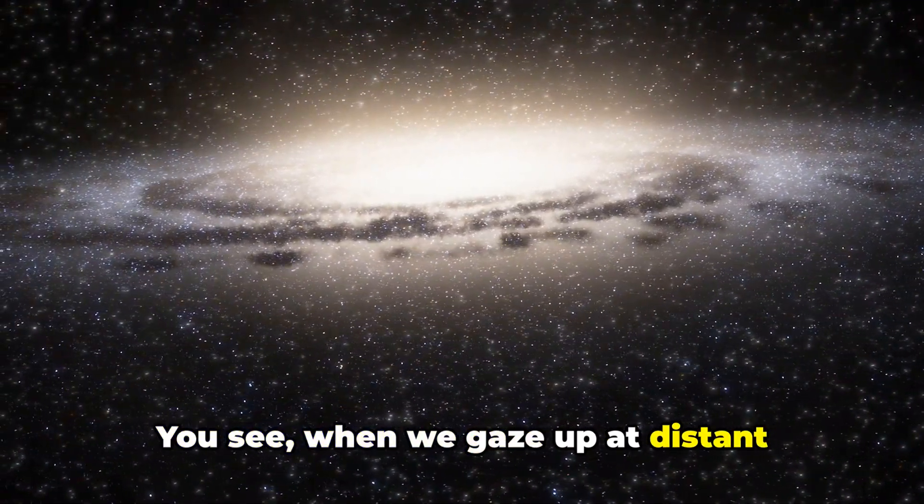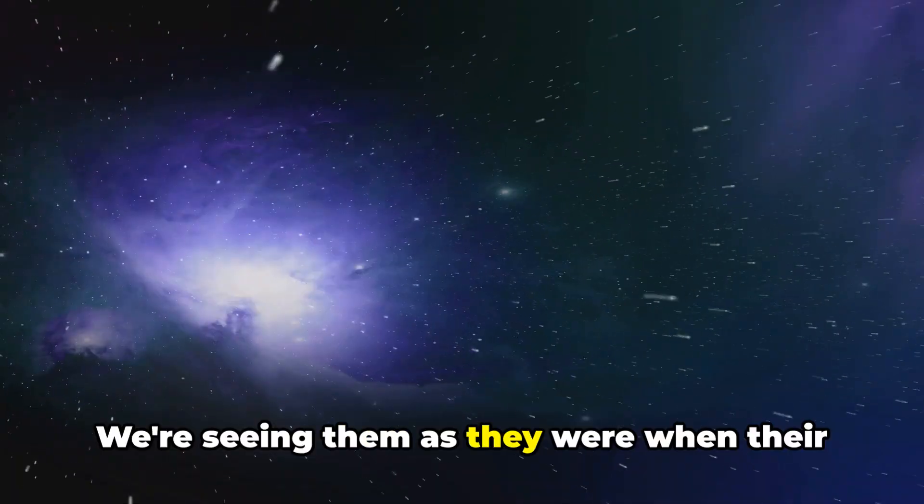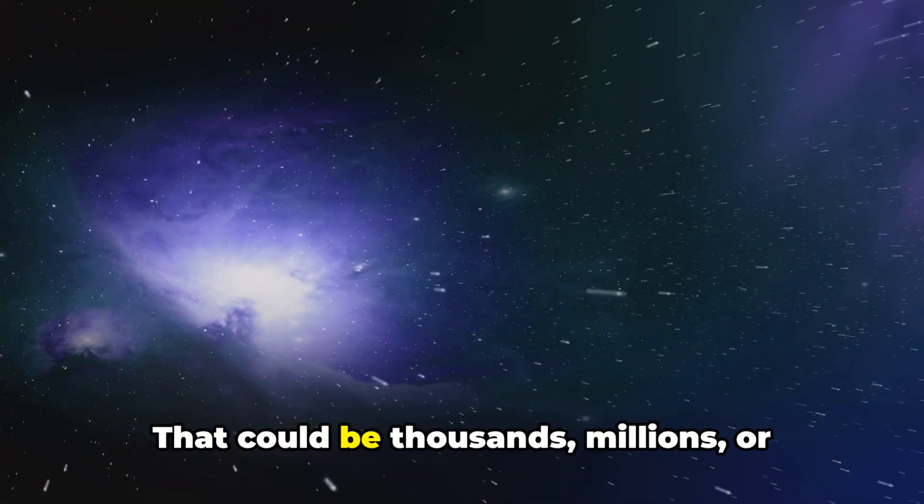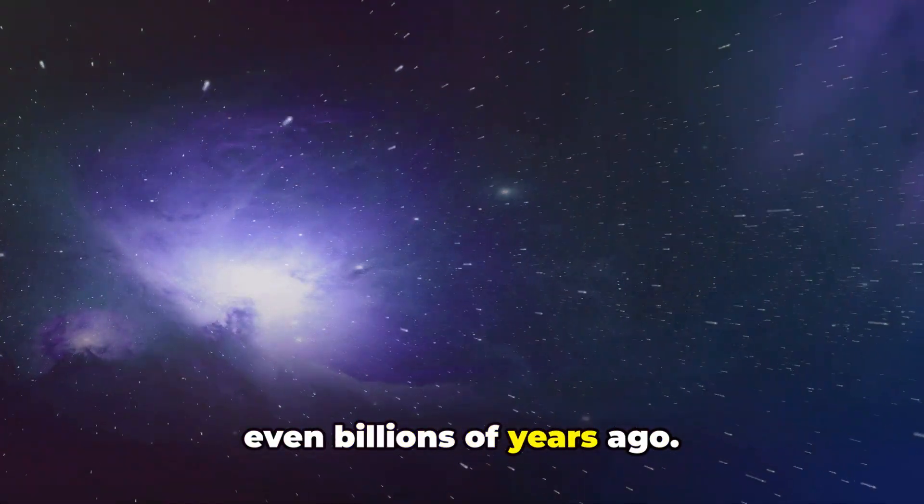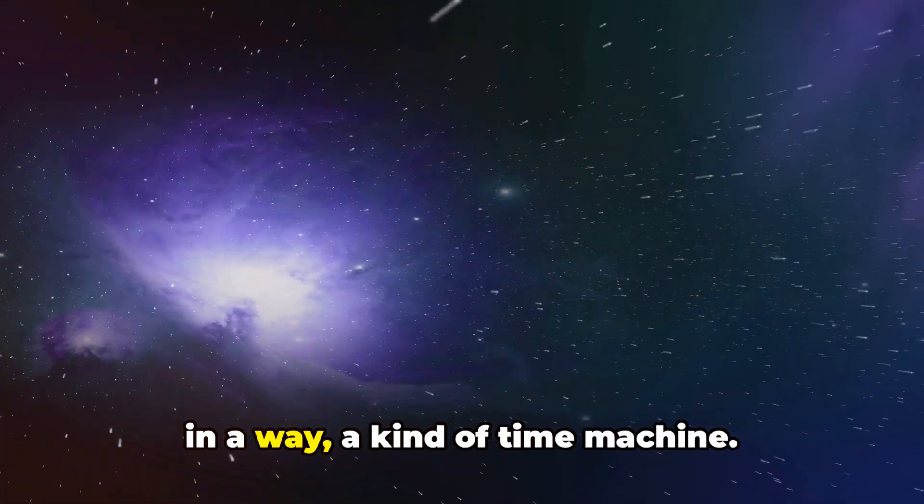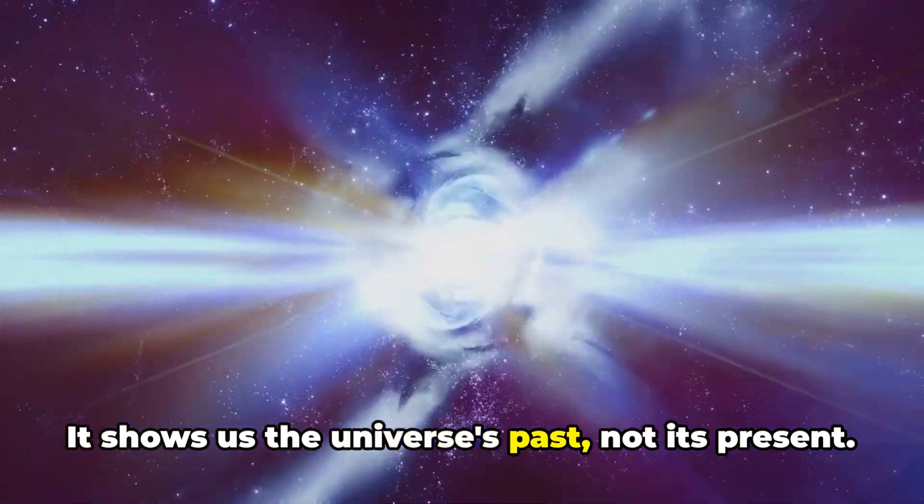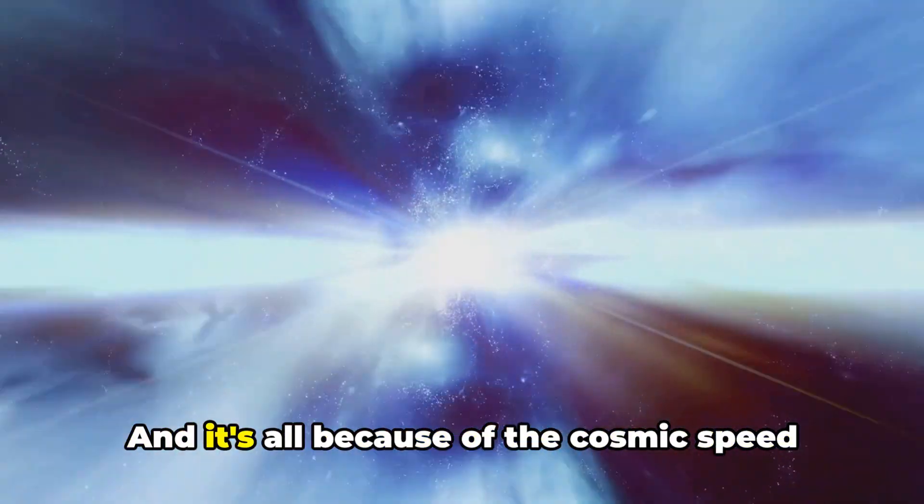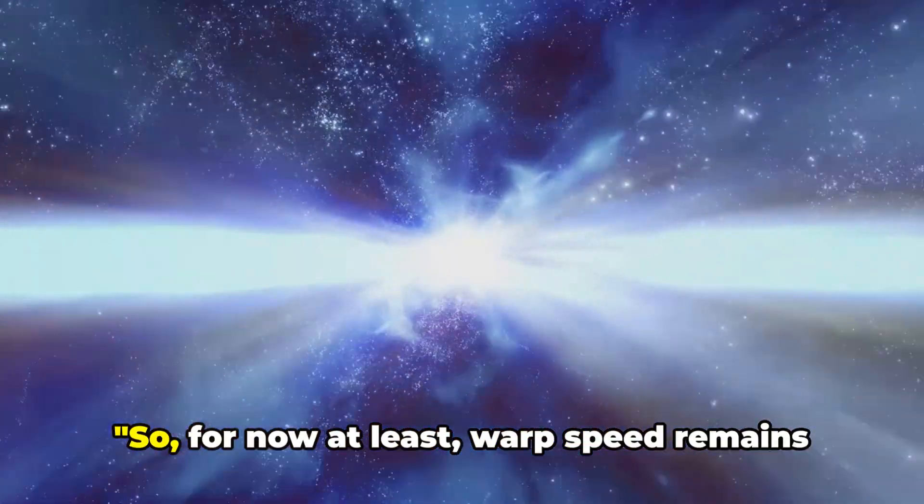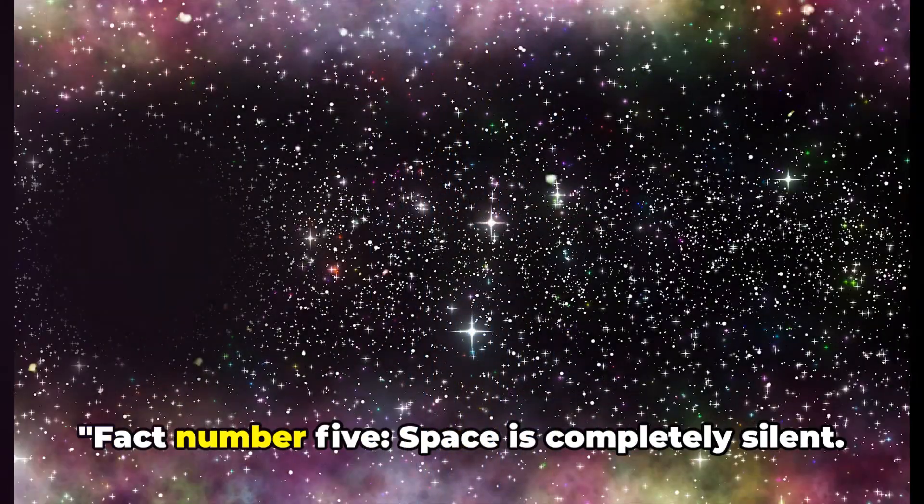You see, when we gaze up at distant stars, we're not just seeing them as they are now. We're seeing them as they were when their light first started to journey towards us. That could be thousands, millions, or even billions of years ago. This means that the universe we see is, in a way, a kind of time machine. It shows us the universe's past, not its present. And it's all because of the cosmic speed limit set by light. So for now at least, warp speed remains in the realm of science fiction.